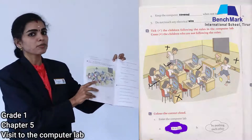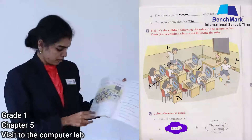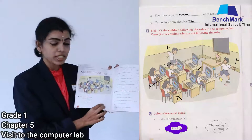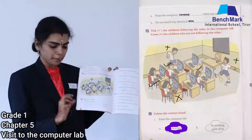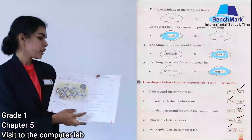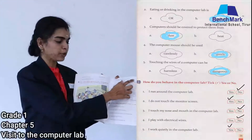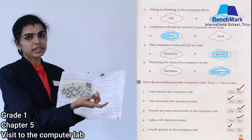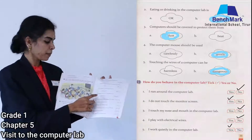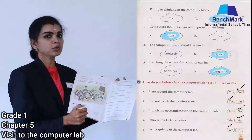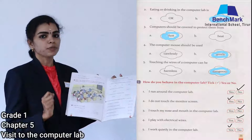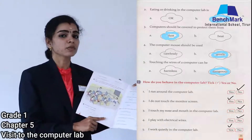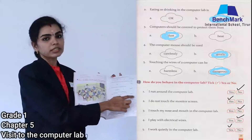For reference, the picture is given here. Next, color the correct cloud. 'Enter the computer lab in a line' — you should enter in a line, not by pushing each other, so color that. 'Eating or drinking in the computer lab is not allowed' — color 'not allowed.' 'Computer should be covered to protect them from heat and dust' — color 'dust.' 'The computer mouse should be used gently' — do not pull the wires — color 'gently.' 'Touching the wires of the computer can be dangerous' — color 'dangerous.'